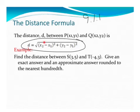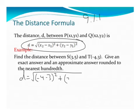Let's try this example here. So my distance is going to be equal to the square root of the difference of my x's, so negative 4 minus 3 squared, plus the difference of my y's, 3 minus 5 squared.